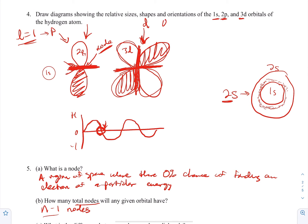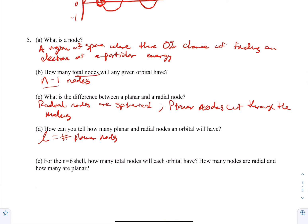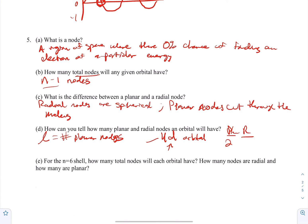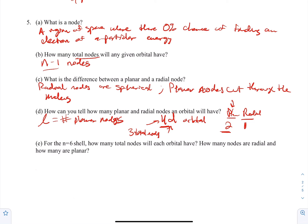For example, a 4d orbital: D means L=2, so there are 2 planar nodes. Since N=4, total nodes = N−1 = 3. If two are planar, then one must be radial. To find radial nodes: take N−1 for total nodes, find L for planar nodes, then subtract to get the number of radial nodes.